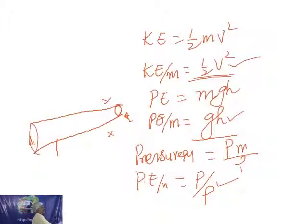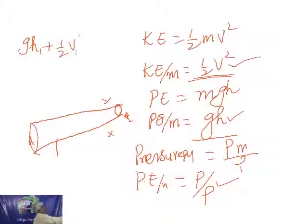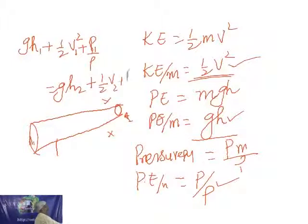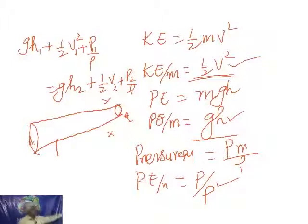We have area A1, pressure P1, mass M1. Therefore on the left-hand side at point P1: GH1 plus half V1 squared plus P1 by rho, always equals GH2 plus half V2 squared plus P2 by rho. In general: GH plus half V squared plus P by rho equals constant. That is called Bernoulli's theorem or Bernoulli's equation.